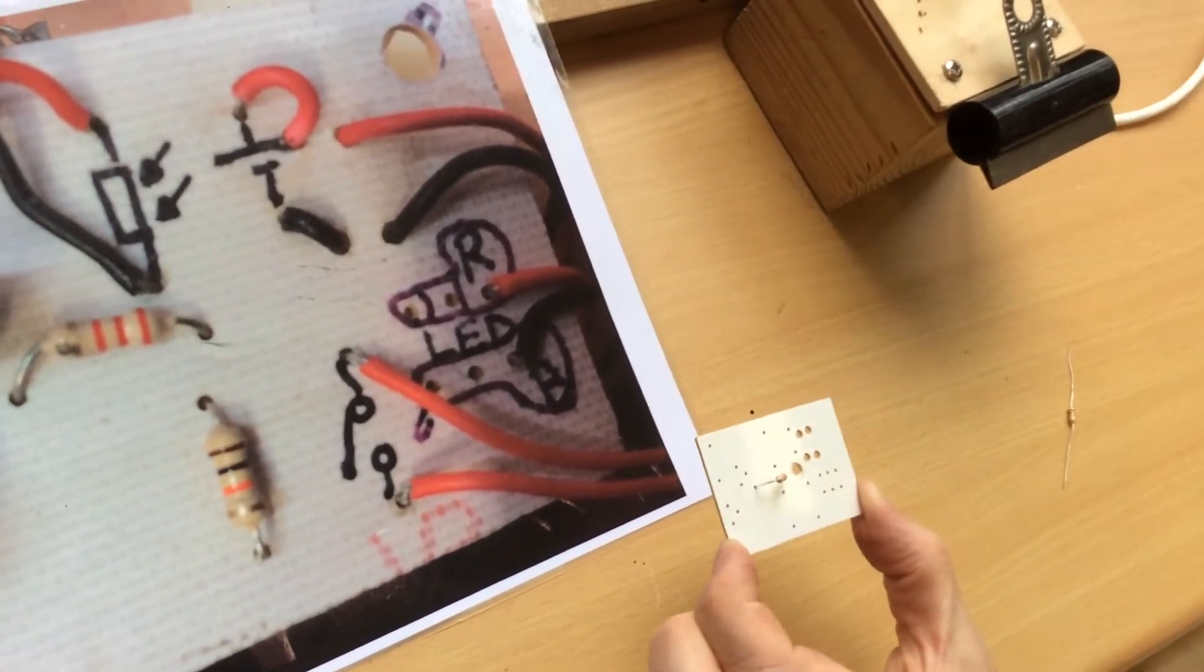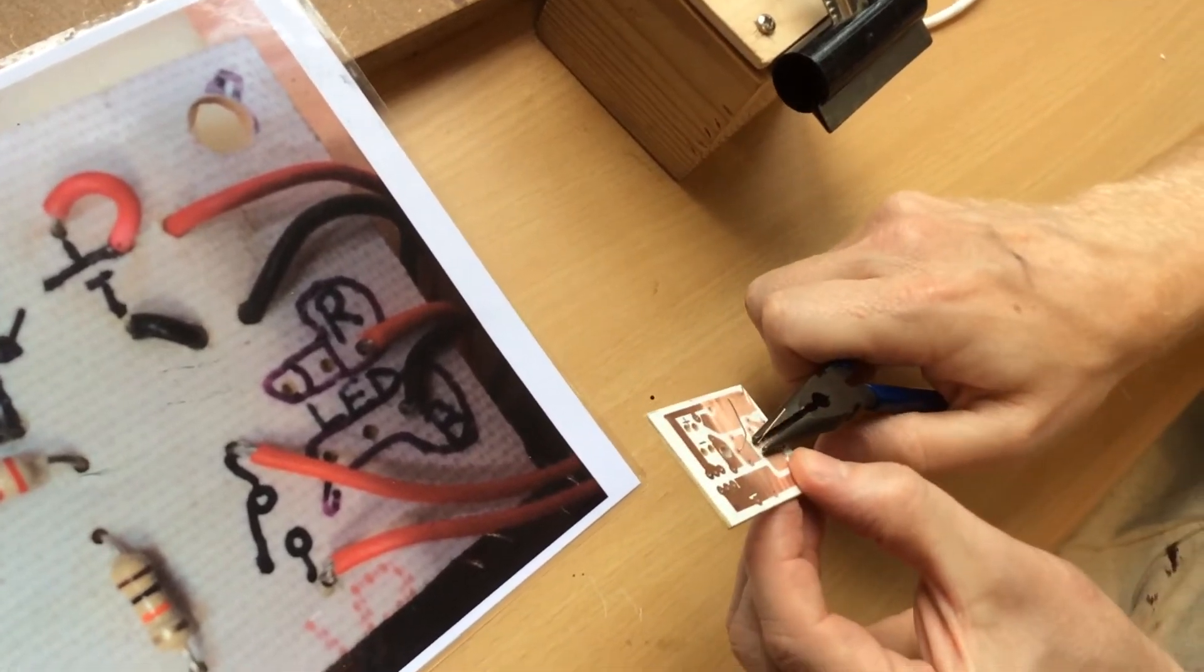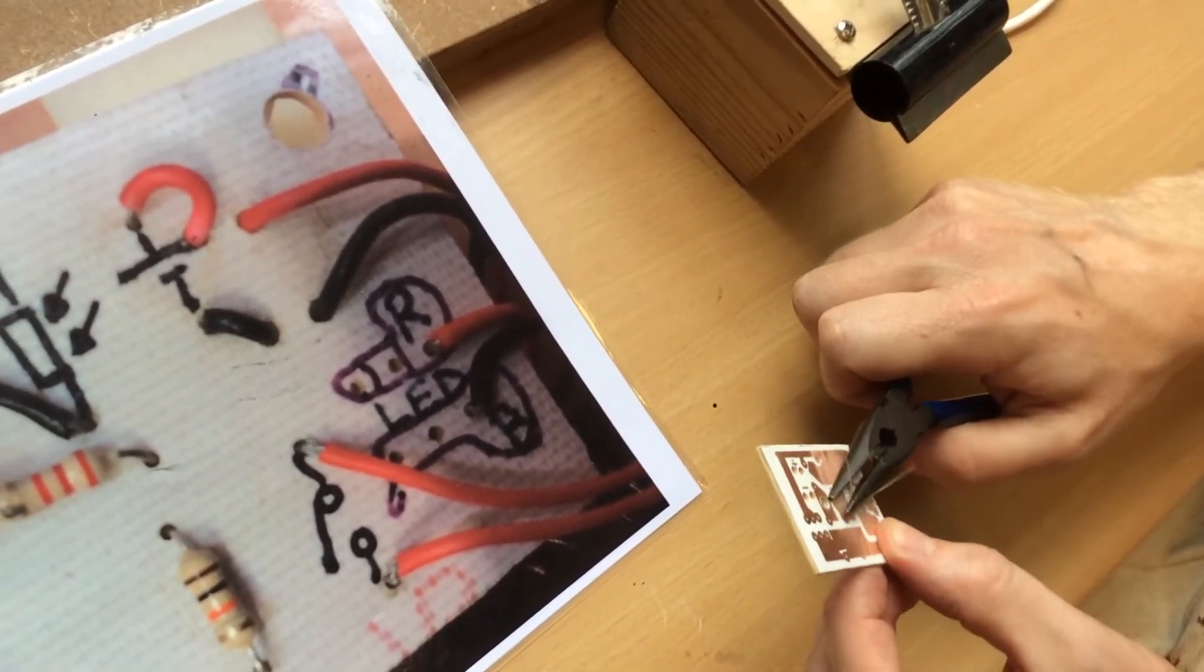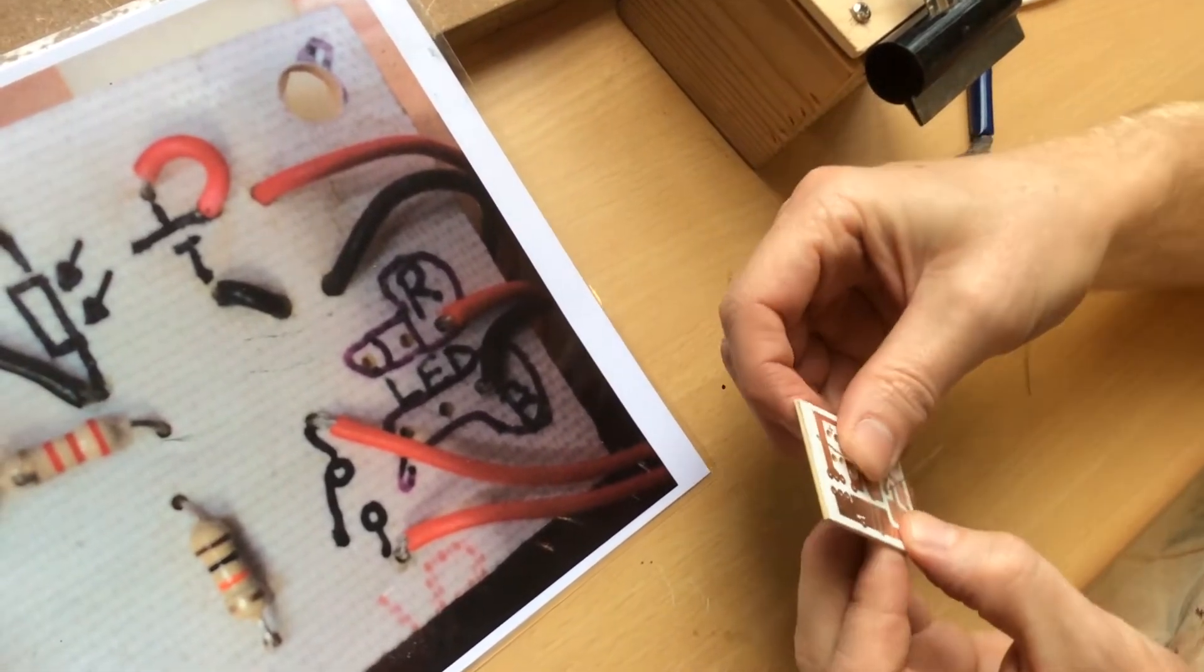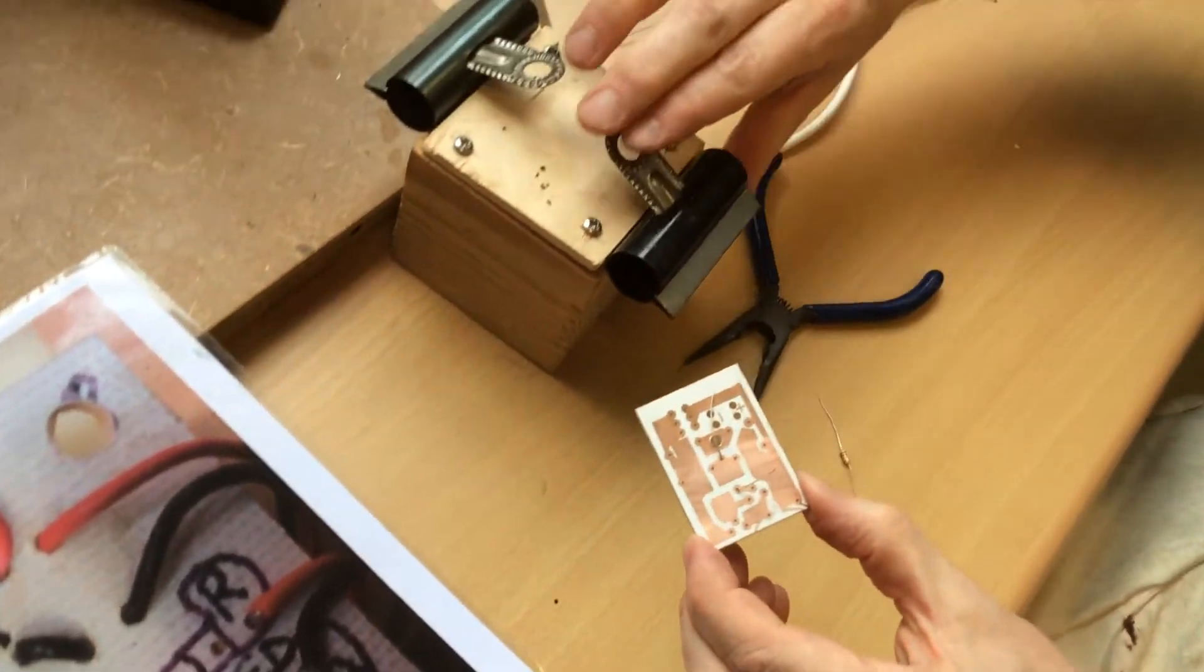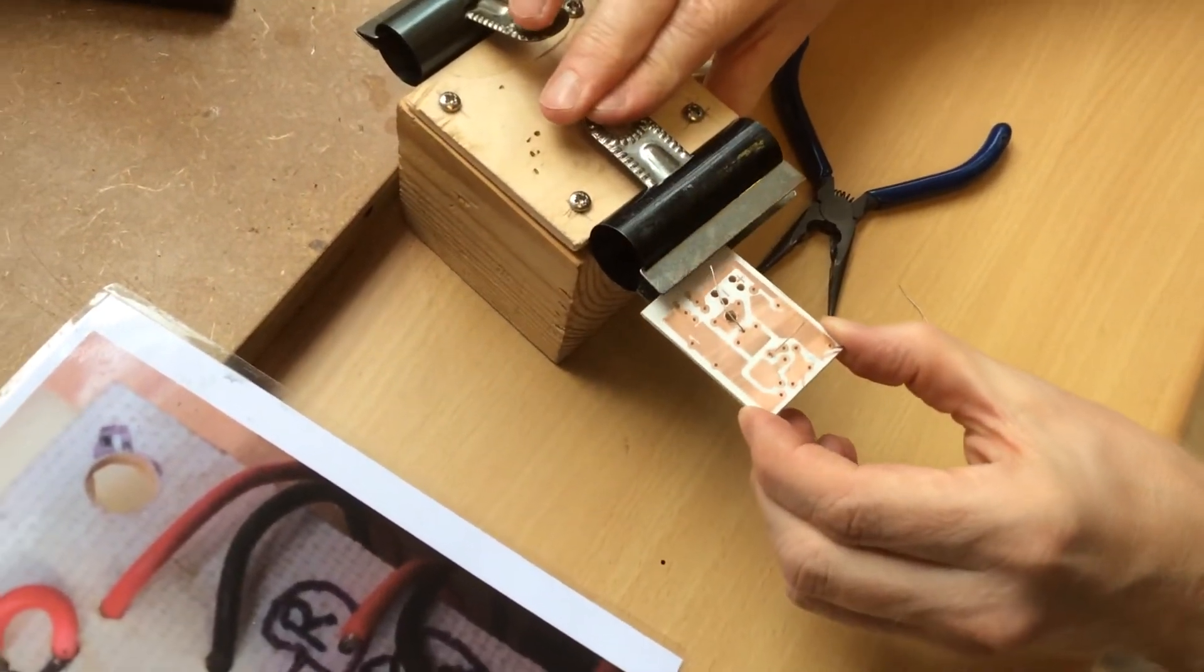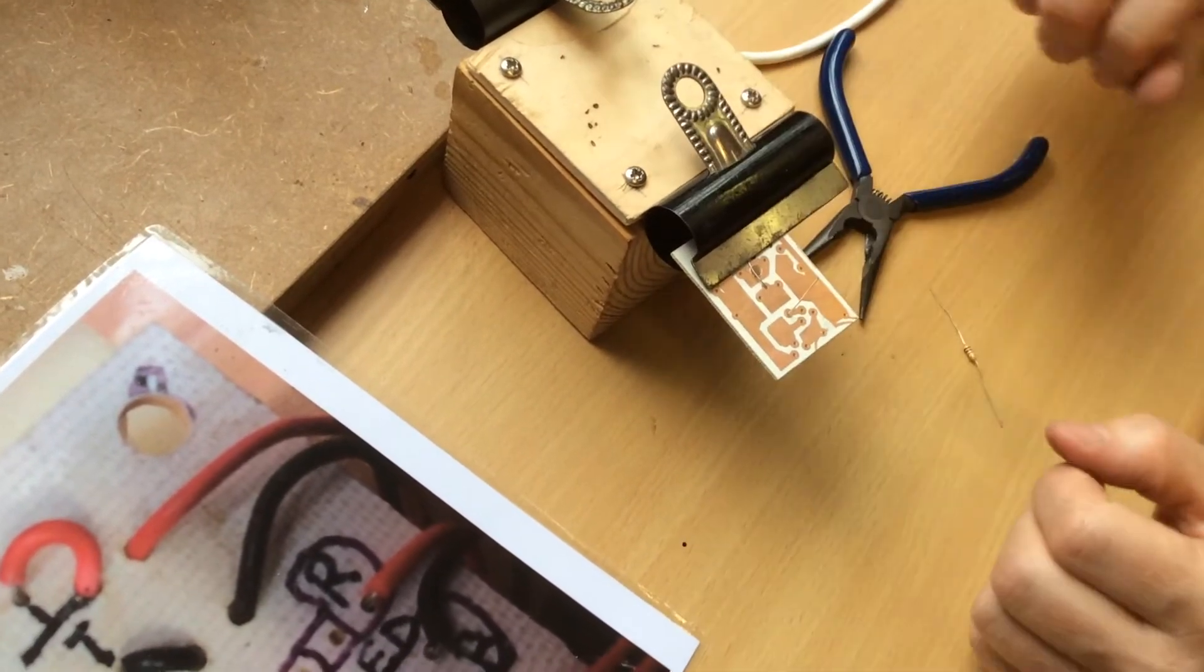If you can't manage to pull it through, just turn it over and use some long nose pliers and just pull it through. To stop it falling out, what we can do is bend over one leg and just keep one nice and straight. Then put it in the helping hand and try and clamp the one in place like that. Clamp the leg down like that.